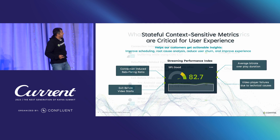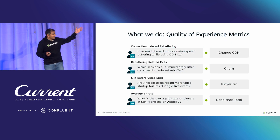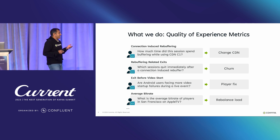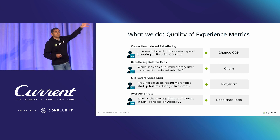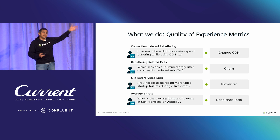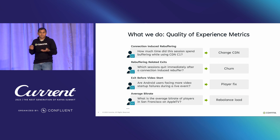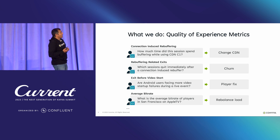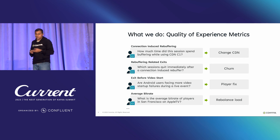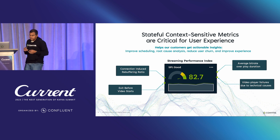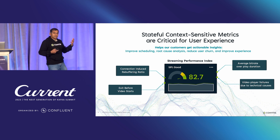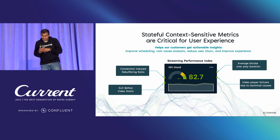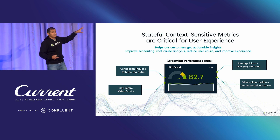We monitor all these complex events at scale to compute metrics like rebuffering-related exits, connection-induced rebuffering, exits before the start of a video player, and average bit rate. All of these metrics drive operational decisions at our customers — they may want to change the CDN, monitor whether a user is likely to churn, do a player software upgrade, or rebalance load across servers. The common factor is that these metrics are highly stateful, complex, and context-sensitive.